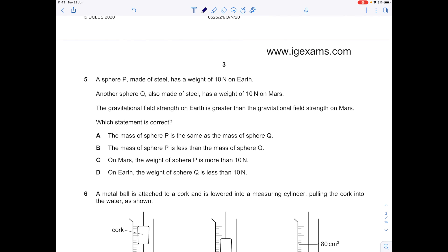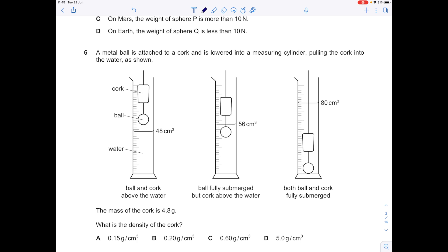A sphere P is made of steel and has a weight of 10 newtons on Earth. Another sphere Q, also made of steel, has a weight of 10 newtons on Mars. The gravitational field strength on Earth is greater than the gravitational field strength on Mars. Which statement is correct? Remember we know that weight is given by this equation: weight equals mass times gravity. The gravitational field strength is less on Mars. Let's go through the statements. The mass of sphere P is the same as the mass of sphere Q. Well, that's not true. The mass of sphere P is less than the mass of sphere Q. Yes, that must be true because weight is the product of mass times gravitational field strength. So the fact that the gravitational field strength on Earth is greater than that of Mars means that the mass of sphere P must be less than that of sphere Q.